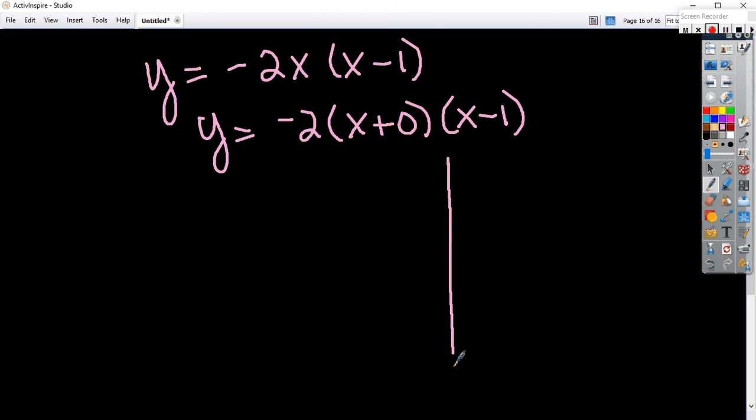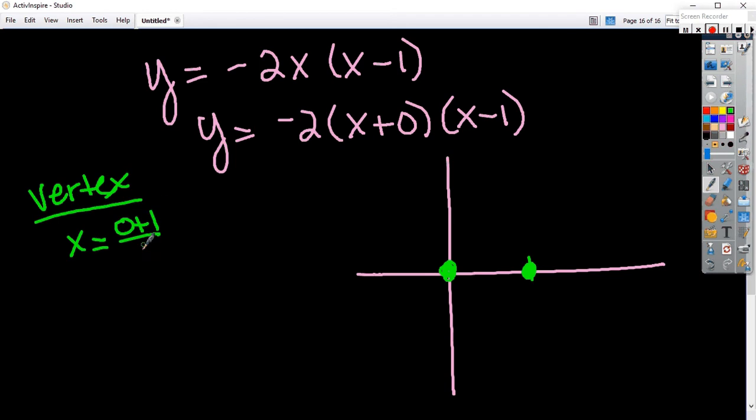This one's going to be a little bit harder because we're going to have a fraction. Okay, so tell me the two places it crosses the x-axis. Close. Zero and positive one, because we've got to change those signs. All right, I need to find in the middle. You can probably look at that and tell what's in the middle. But if I couldn't, one-half, then I add them together and divide by two.